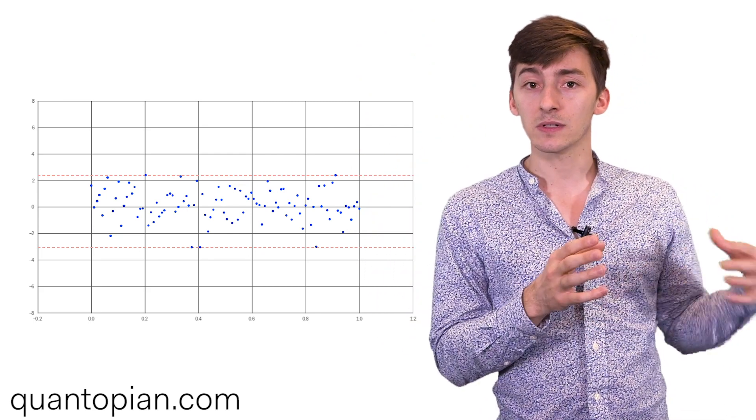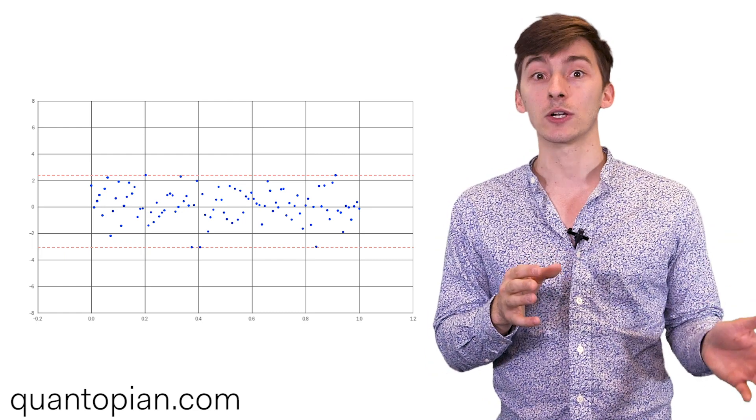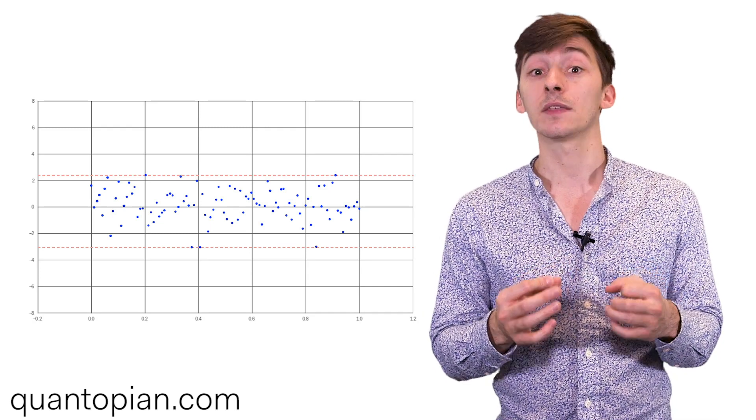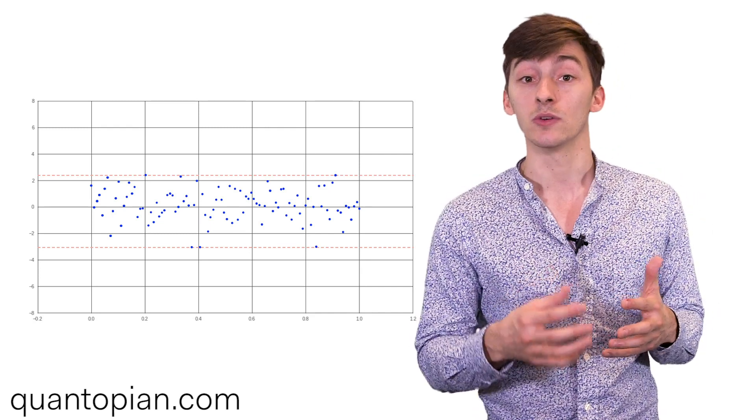And likewise, if there's anything that's particularly low, we're going to raise it until it's just at the threshold. This way we're keeping the observations that have extreme values, we're just not letting the values become so extreme that they skew our model.